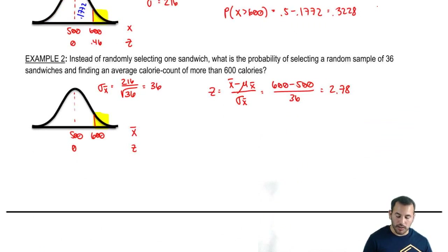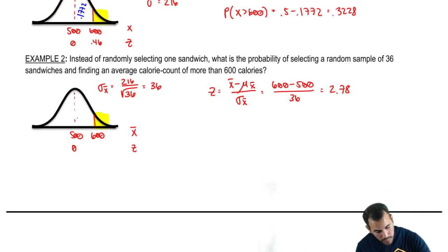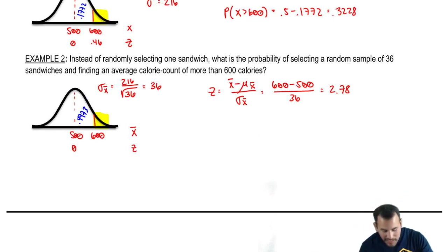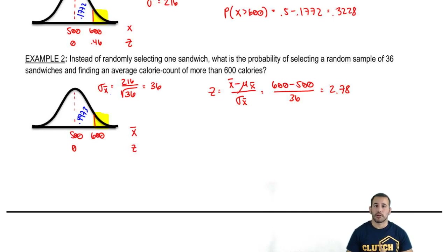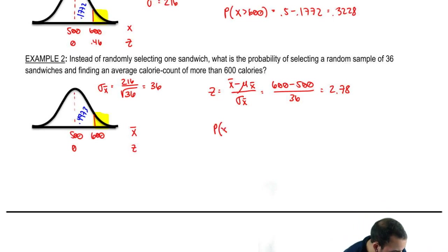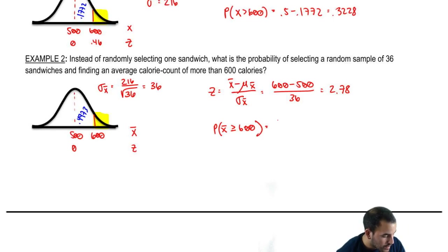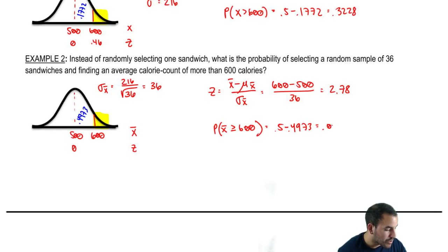That area of 0.4973 corresponds to the area between 500 and 600 — those are averages. But we're looking for the area to the right of that. So the probability that x-bar is greater than 600 is 0.5 minus 0.4973, which leaves us with 0.0027.